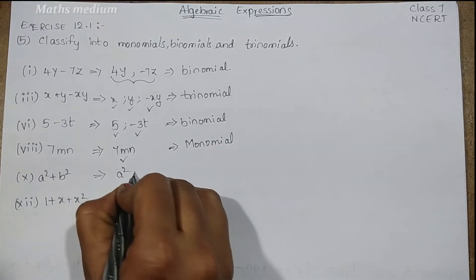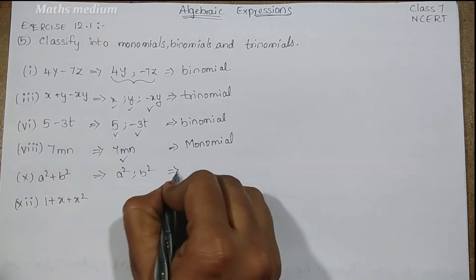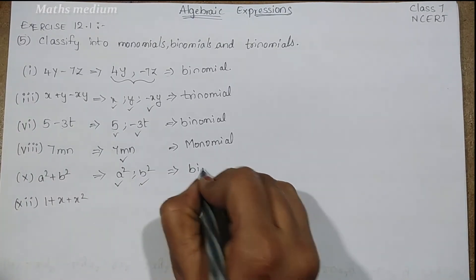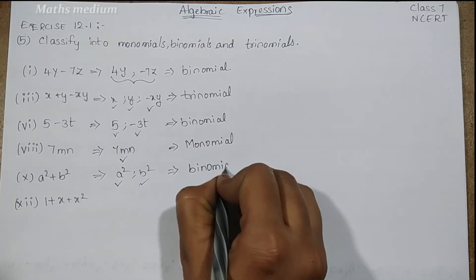Next one, a square plus b square. In this we have two terms, so it is also called binomial.